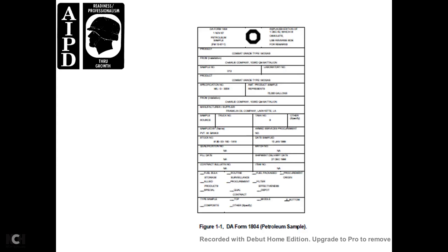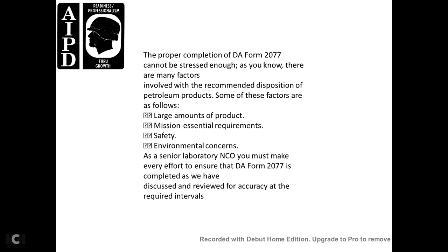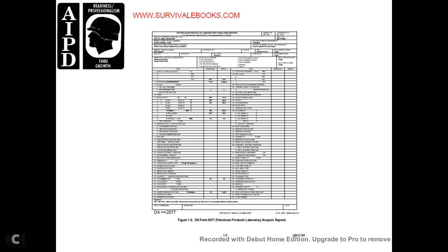Once the petroleum laboratory NCOIC approves the results and disposition recommendation, a typed DA Form 2077 is prepared from the approved working copy. The original is kept in the permanent file, with enough copies made to satisfy all interested parties and forwarded to requesting agencies. Proper completion of the DA Form 2077 cannot be stressed enough, as many factors — including mission-essential requirements, safety, and environmental concerns — are involved in disposition recommendations.